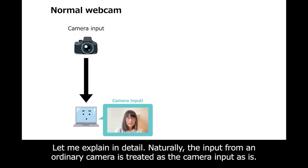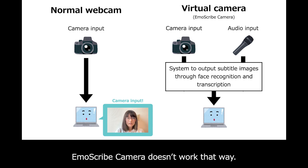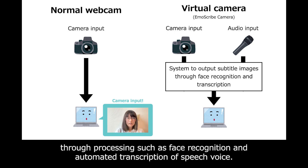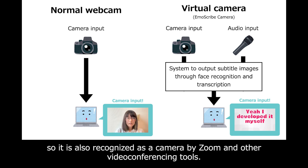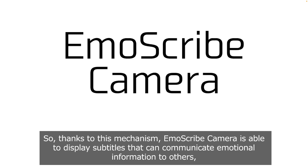Let me explain in detail. Normally, the input from an ordinary camera is treated as the camera input as-is. EmoScribe Camera doesn't work that way. First, the EmoScribe Camera application uses the camera and audio input to generate subtitle images through processing such as face recognition and automated transcription of speech. The application is designed so that the operating system recognizes it as a normal camera input, making it compatible with Zoom and other video conferencing tools. Such a system is widely referred to as a virtual camera. Thanks to this mechanism, EmoScribe Camera is able to display subtitles that communicate emotional information to others even when your camera and microphone are turned off.